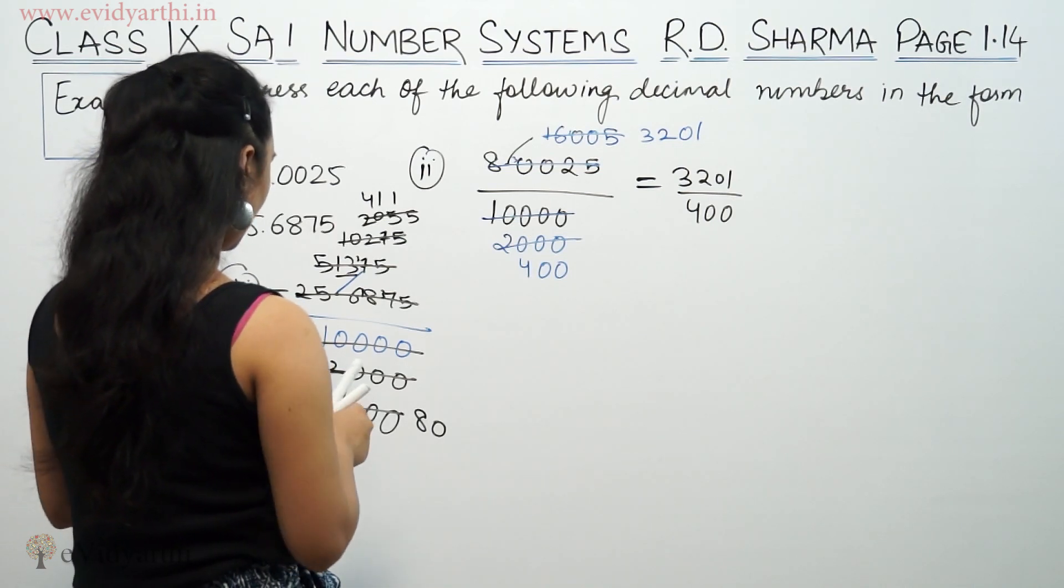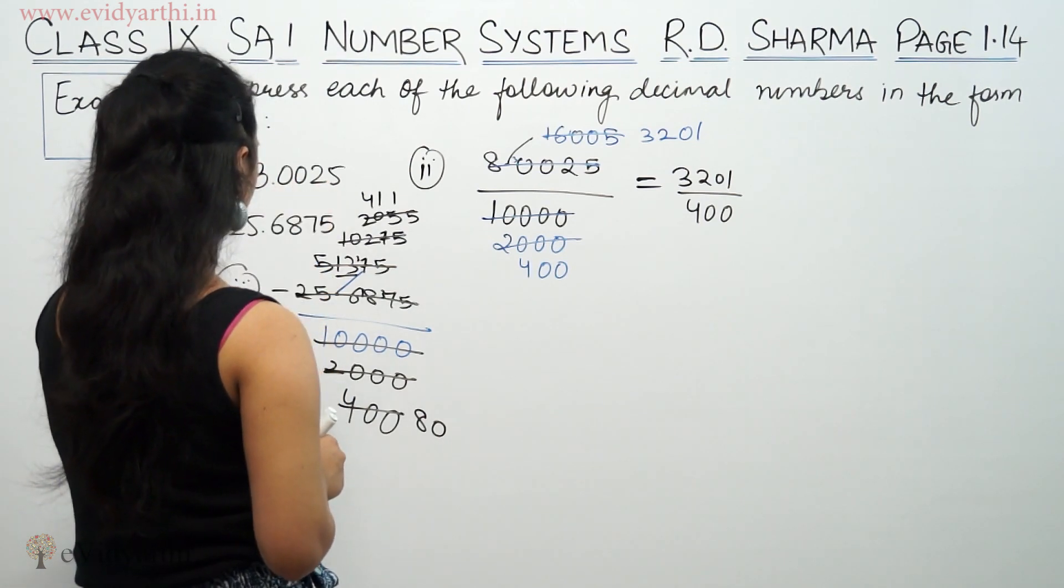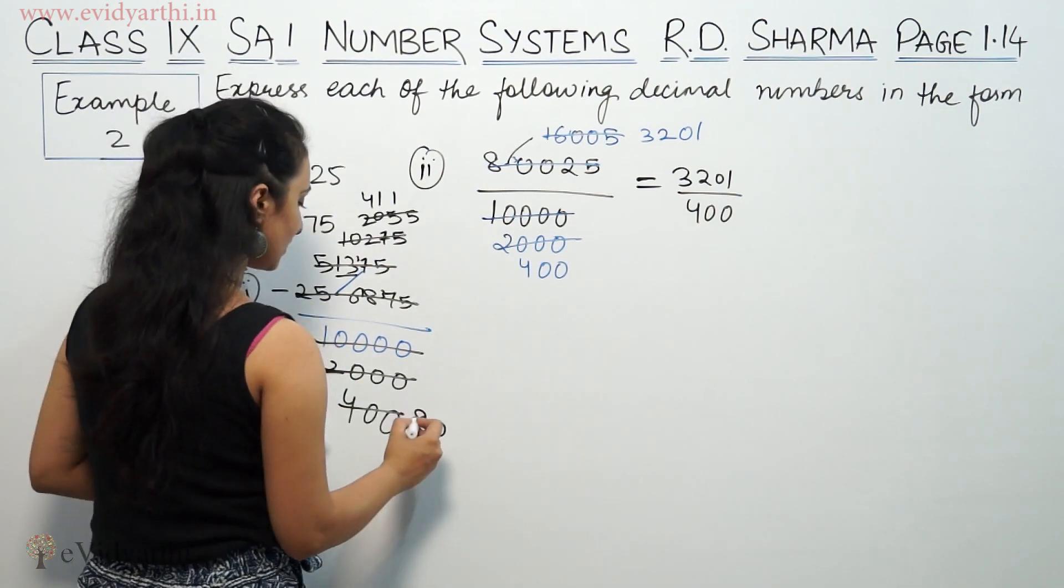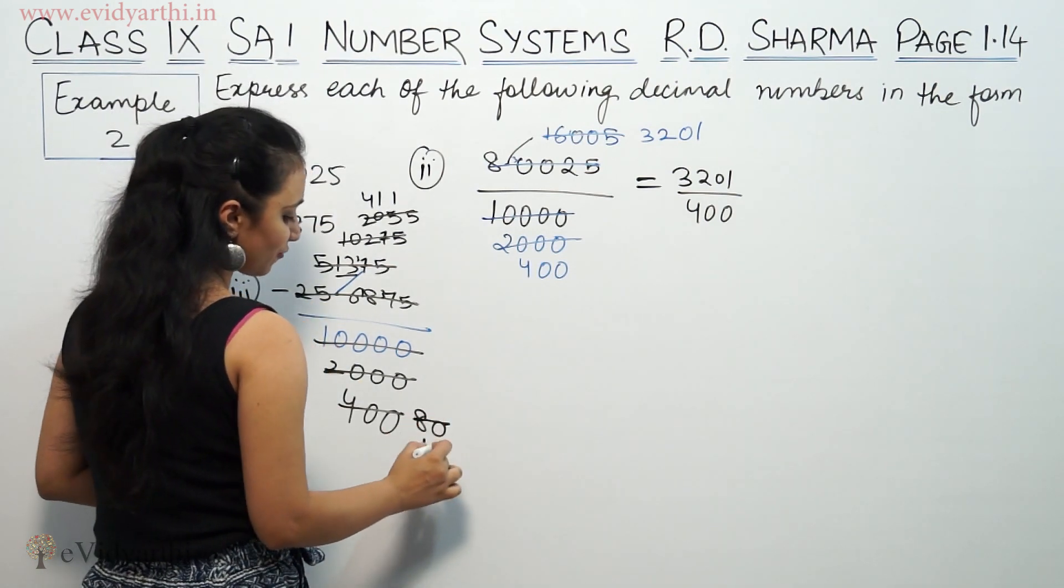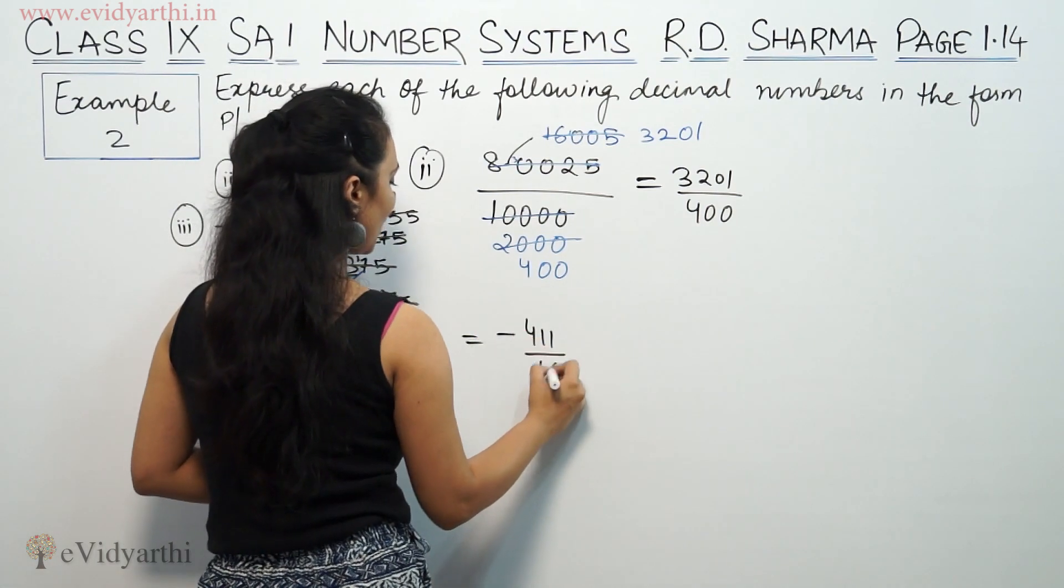So this is 5, 1's a 5. 5, 5's a, 5, 6's a 30. So this is minus 4, 1, 1 by 1, 6.